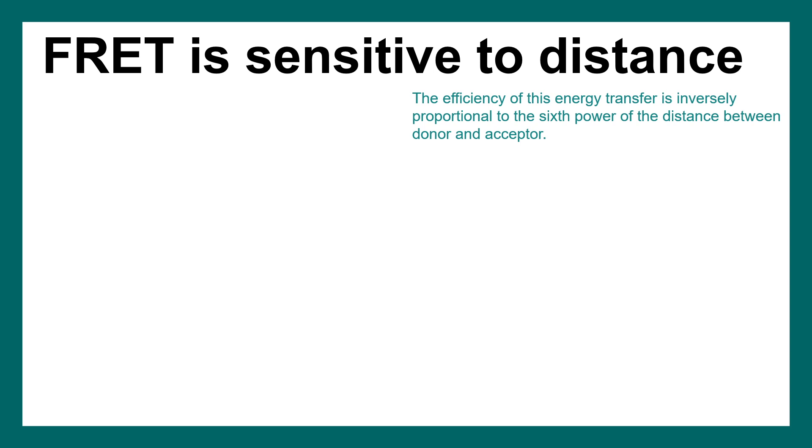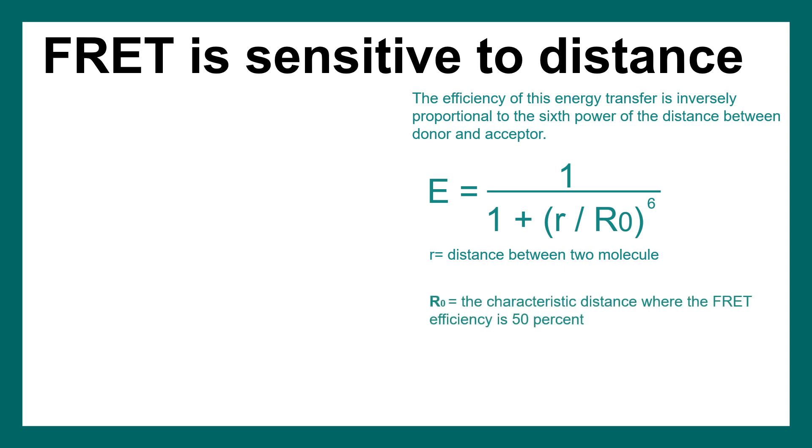The efficiency of this energy transfer is inversely proportional to the 6th power of the distance between donor and acceptor. This is the FRET efficiency equation. E means the efficiency of FRET, and it is proportional to 1 divided by 1 plus R by R0 to the 6th power. R is the distance between the two molecules, and R0 is a characteristic distance where FRET efficiency is 50%. We can plot a graph of efficiency with R by R0, and the graph looks like this.